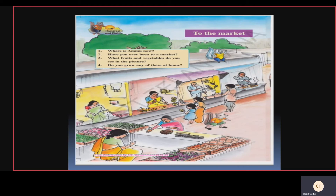Third question: What fruits and vegetables do you see in the picture? On page number 109 they have given you some fruits. For vegetables I can see brinjal, carrots, potatoes, chilies, onions, as well as green leafy vegetables in the picture. For fruits I can see papaya, pineapples, mangoes, guava, apples, bananas, cherries, dates, and watermelon.